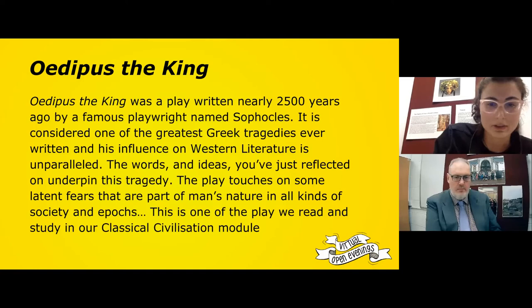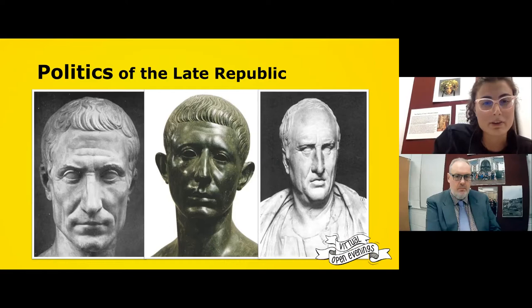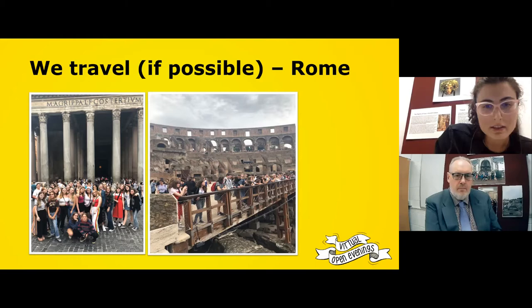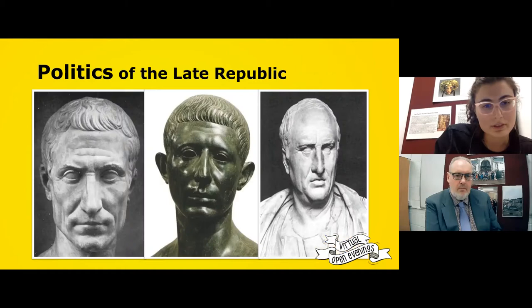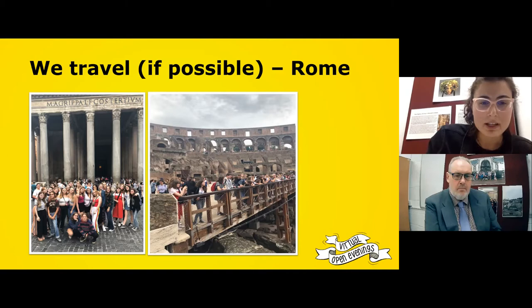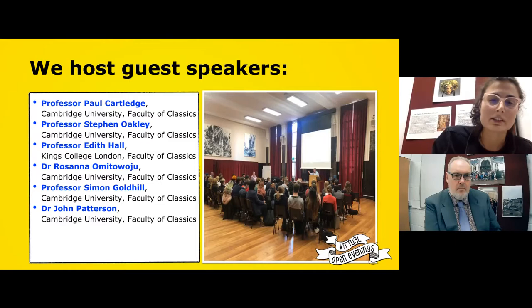Here is a very nice image of the three key players studied in the module on the Politics of the Late Republic. Another thing we do in Classical Civilization is organise educational trips. These are images from last year — students went to Rome and were able to see some of the places they had studied and analysed in the module, furthering their understanding of the subject matter.